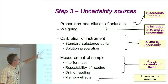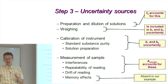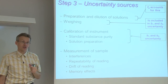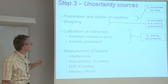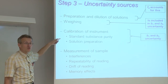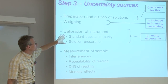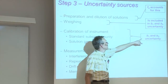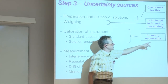Then comes calibration of the photometer, which has two uncertainty sources: the purity of the standard substance, and also the preparation of solutions. Both of these uncertainty sources have an effect on the calibration graph slope and the intercept, represented by B1 and B0.